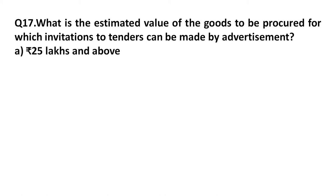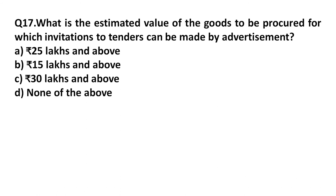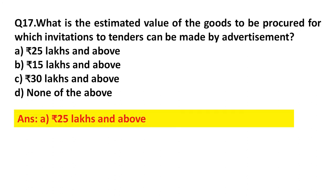Question 17: What is the estimated value of goods for which invitation to tender can be made by advertisement? Option A: Rupees 25 lakhs and above. Option B: 15 lakhs and above. Option C: 30 lakhs and above. Option D: None of the above. Answer: Option A, 25 lakhs and above.